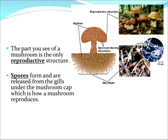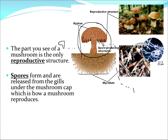The part you see of a mushroom is only the reproductive structure — down here is the main part of it, but the mushroom part that sticks up is the reproductive structure. Spores form and are released from the gills underneath the mushroom cap, which is how a mushroom reproduces. Have you ever looked at the weird gill-like things underneath a mushroom if you turn it upside down? Those are the areas where the mushroom releases spores. A little spore comes out, goes somewhere else, and buds to form its own mushroom. It reproduces asexually by releasing spores of itself.